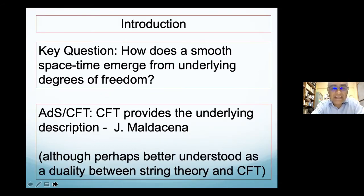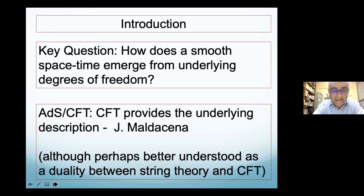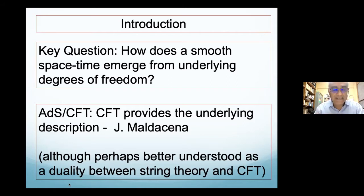A key question in the study of quantum gravity is: how does a smooth space-time arise? If we have an underlying description, we would like to know how does a smooth space-time emerge from the underlying degrees of freedom. Within the AdS/CFT correspondence there is a concrete way to at least try and pose this question. The conformal field theory can be thought of as providing the underlying description, and we would like to understand how a smooth anti-de-Sitter space geometry arises or emerges from it.